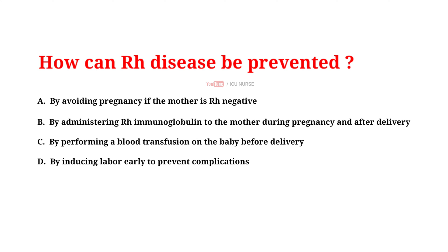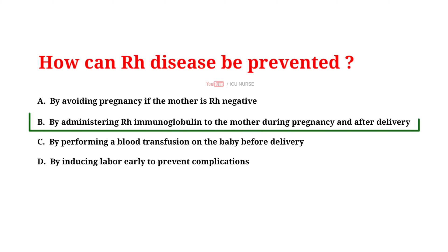How can Rh disease be prevented? A. By avoiding pregnancy if the mother is Rh negative. B. By administering Rh immunoglobulin to the mother during pregnancy and after delivery. C. By performing a blood transfusion on the baby before delivery. D. By inducing labor early to prevent complications. And the correct answer is B: by administering Rh immunoglobulin to the mother during pregnancy and after delivery.